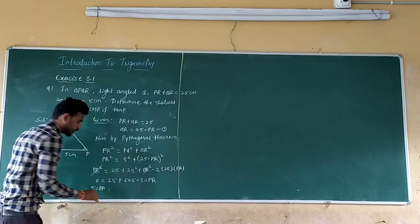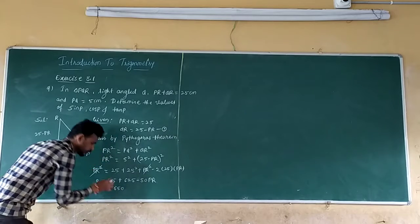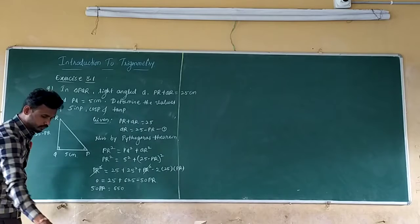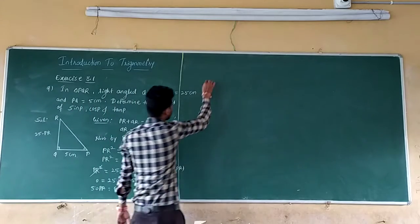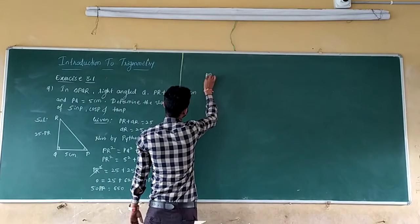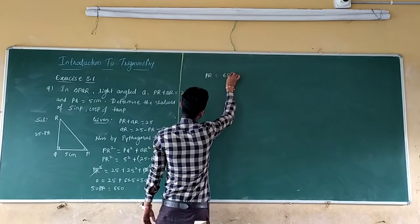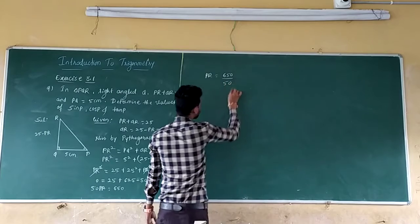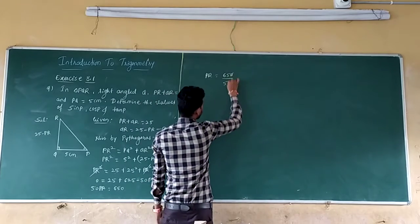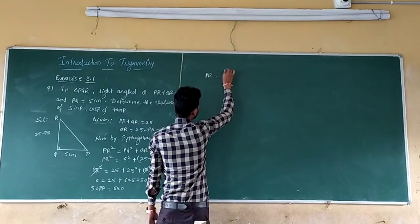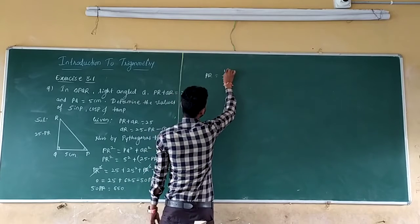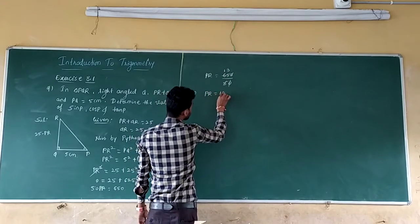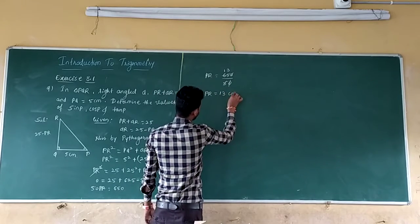So PR is equal to 650 divided by 50. So zero on both sides cancel, 5 and 5, 5 and 5, means 5 into 13. So PR equals how much? 13 cm. So now substitute this PR in equation 1.